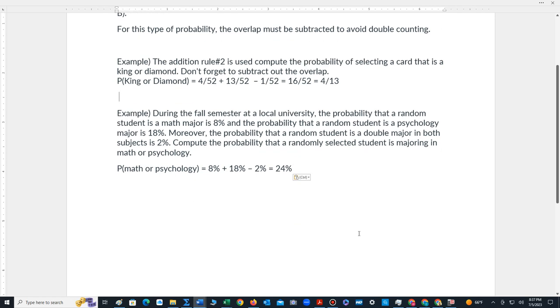Let's look at another example. During the fall semester at a local university, the probability that a random student is a math major is 8%. The probability that a random student is a psychology major is 18%. Moreover, the probability that a random student is a double major in both subjects is 2%. Compute the probability that a randomly selected student is majoring in math or psychology.